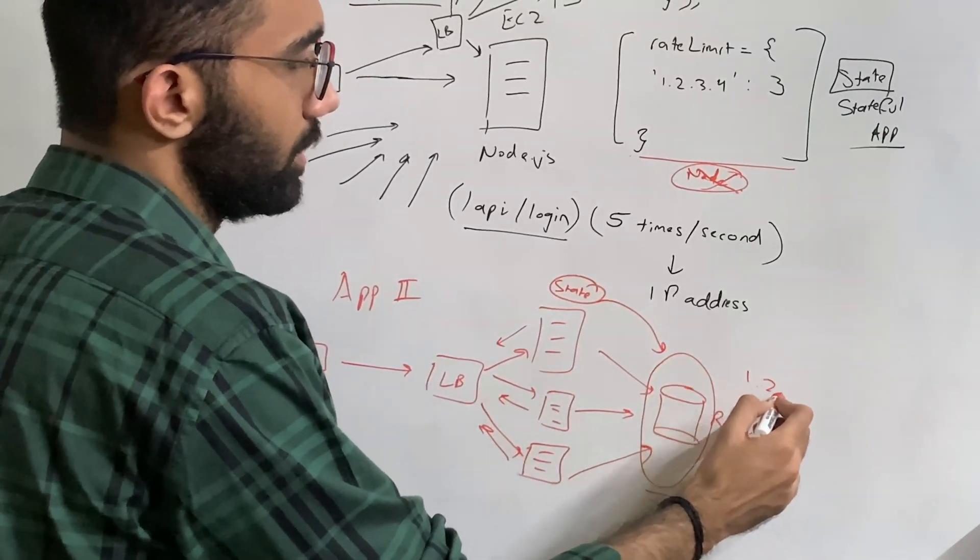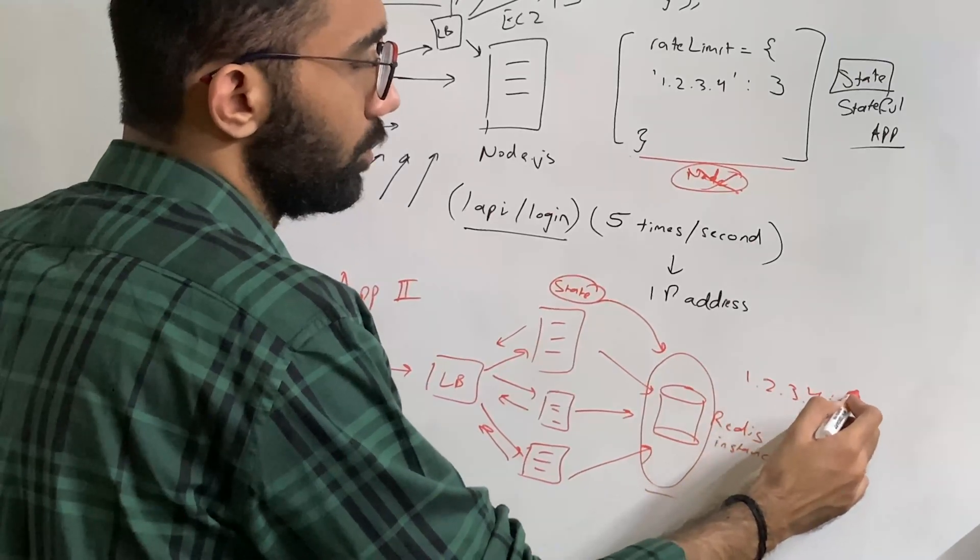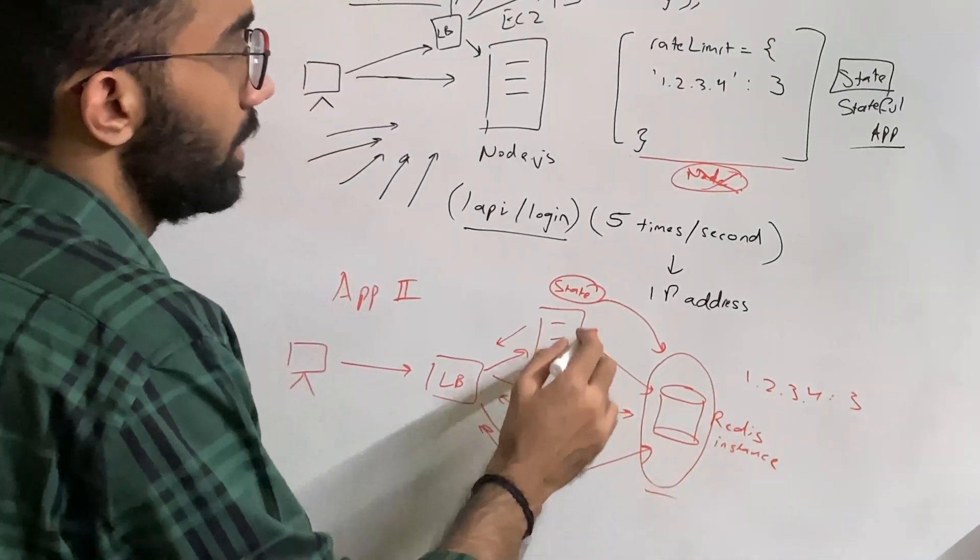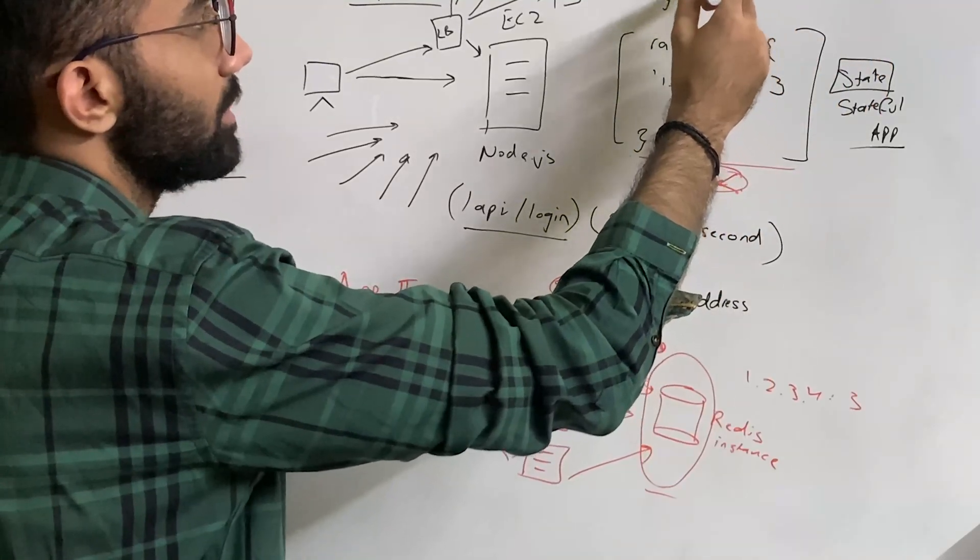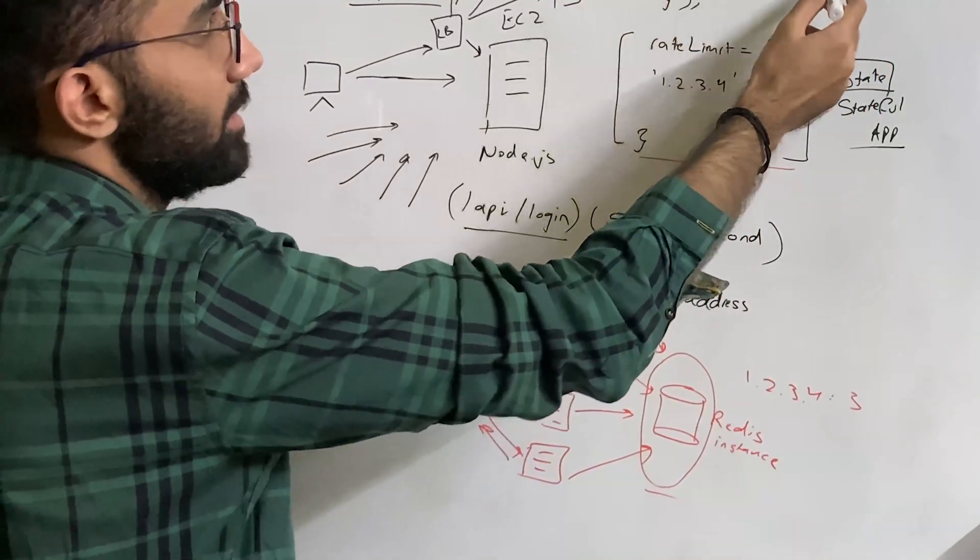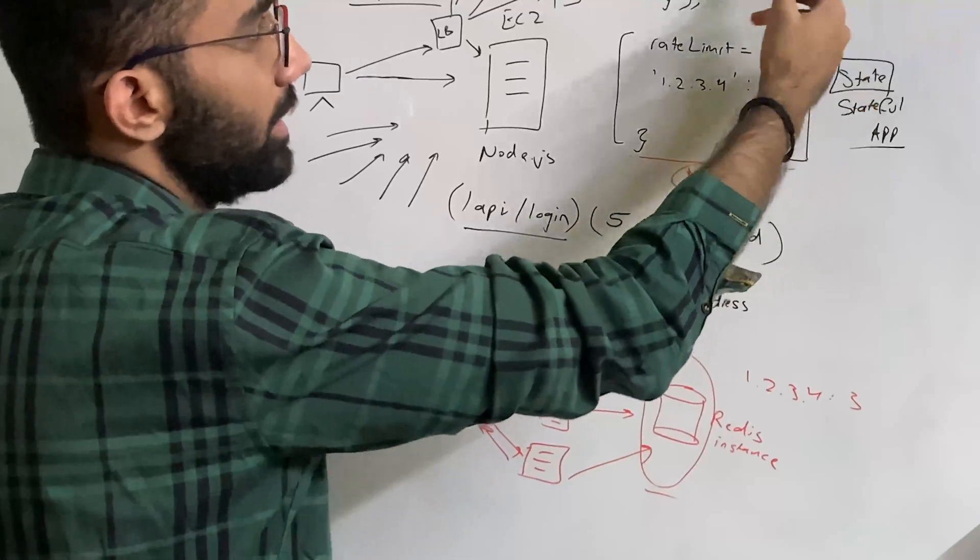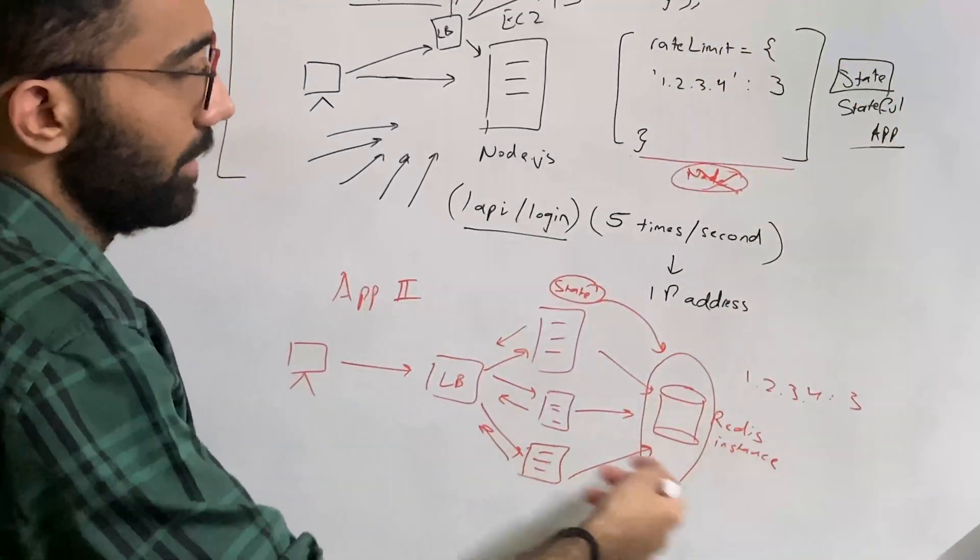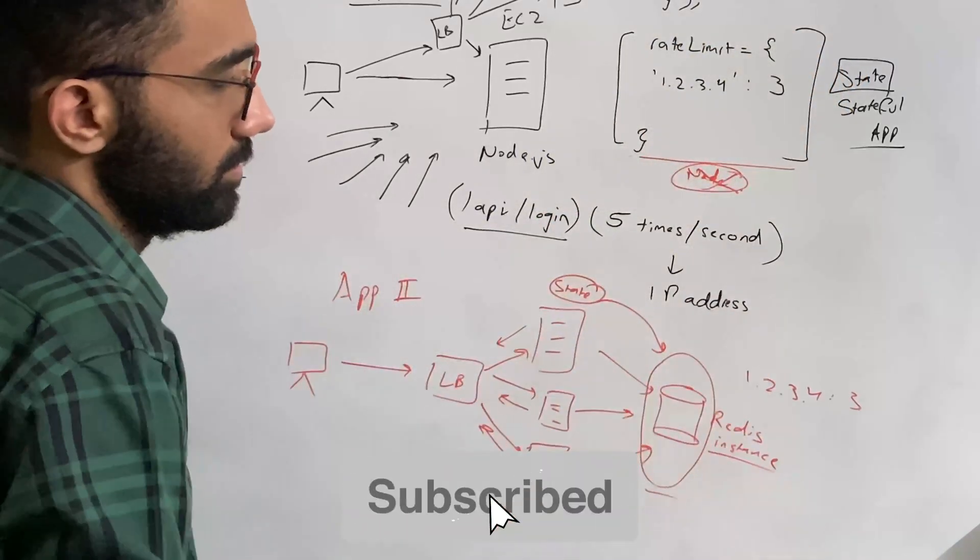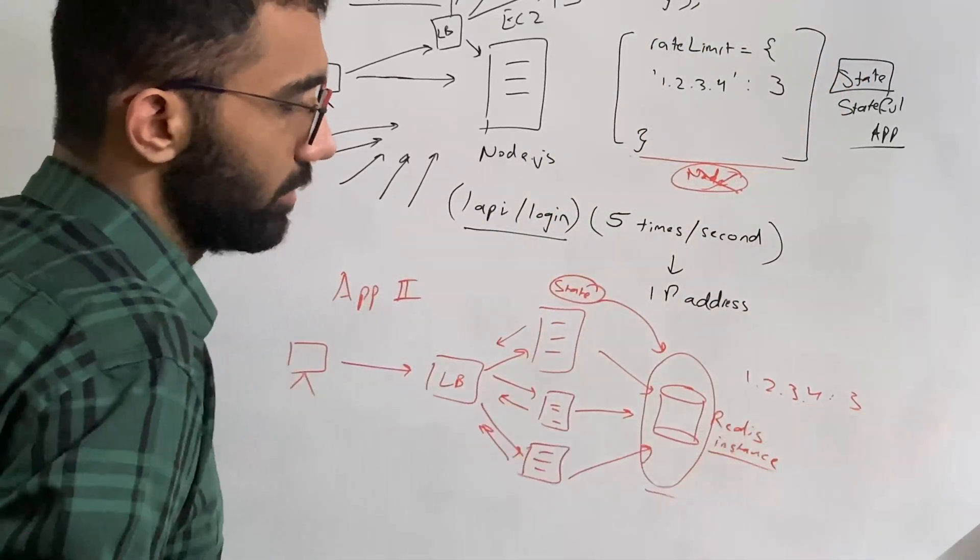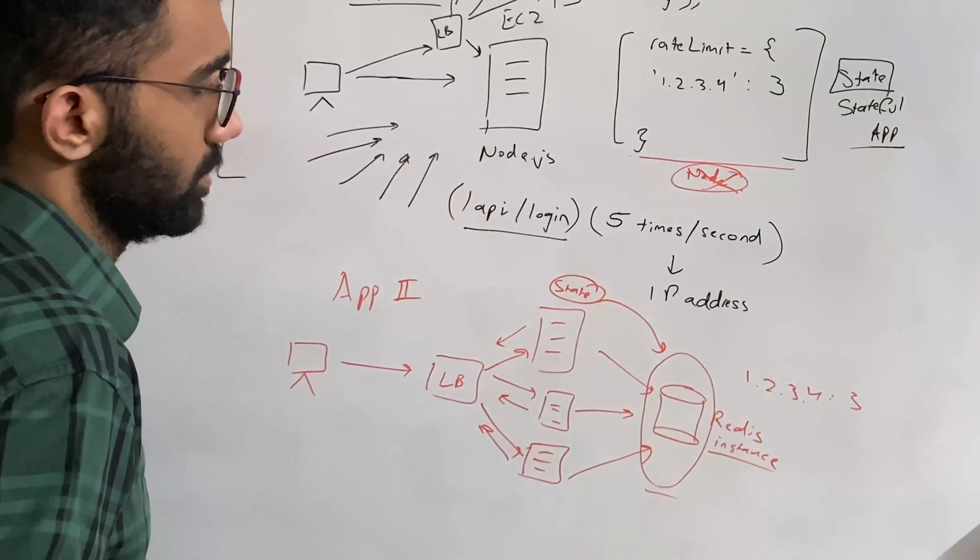For example, your key could be 1.2.3.4, in this case, and the value could be three. And every single time you hit here, instead of saying something like this, what you say is something like await Redis dot set IP, you know, increment Redis dot whatever. I mean, I don't remember the command exactly, but you can increment the key values directly inside Redis in an atomic operation. So that's fine.